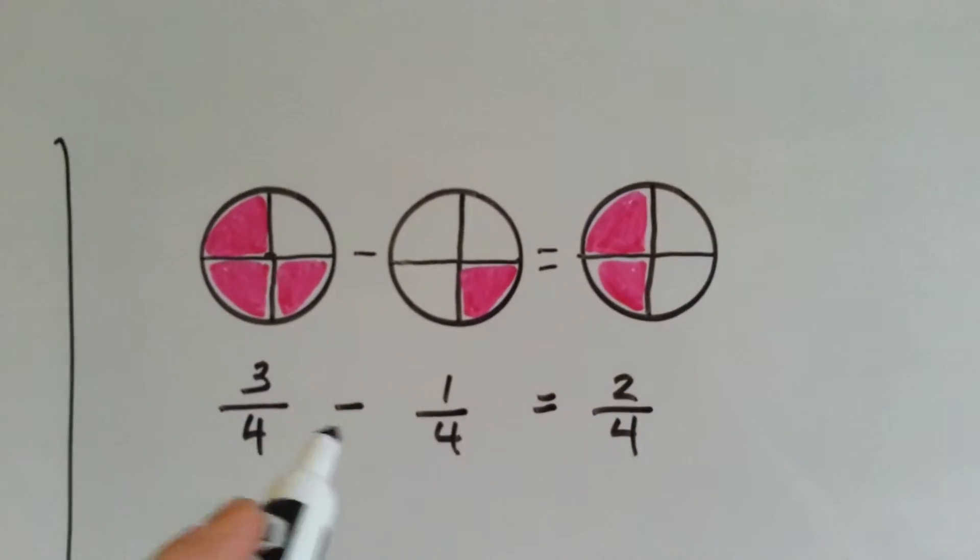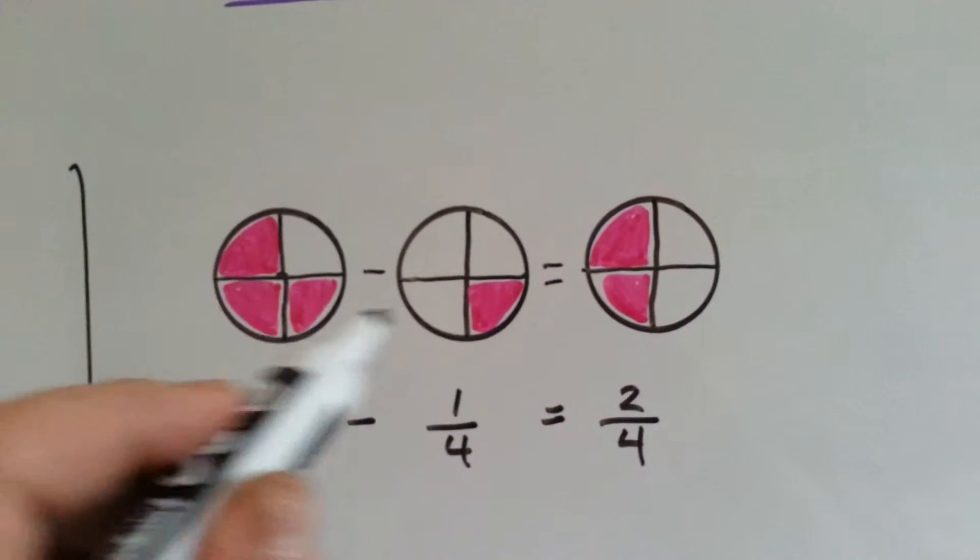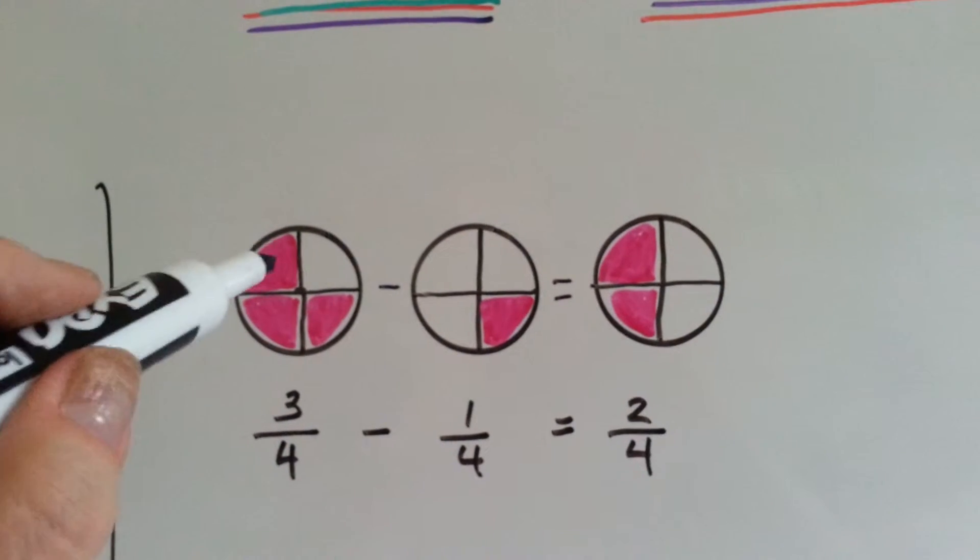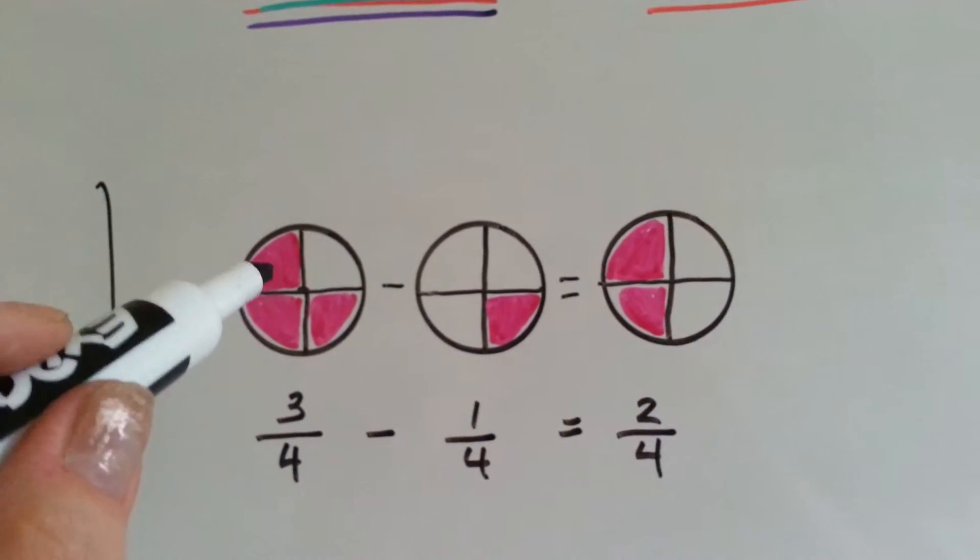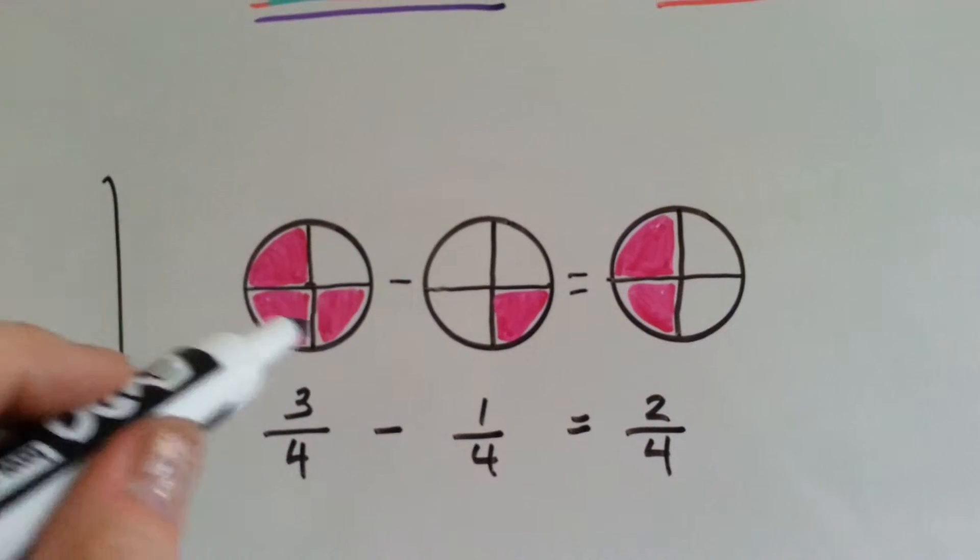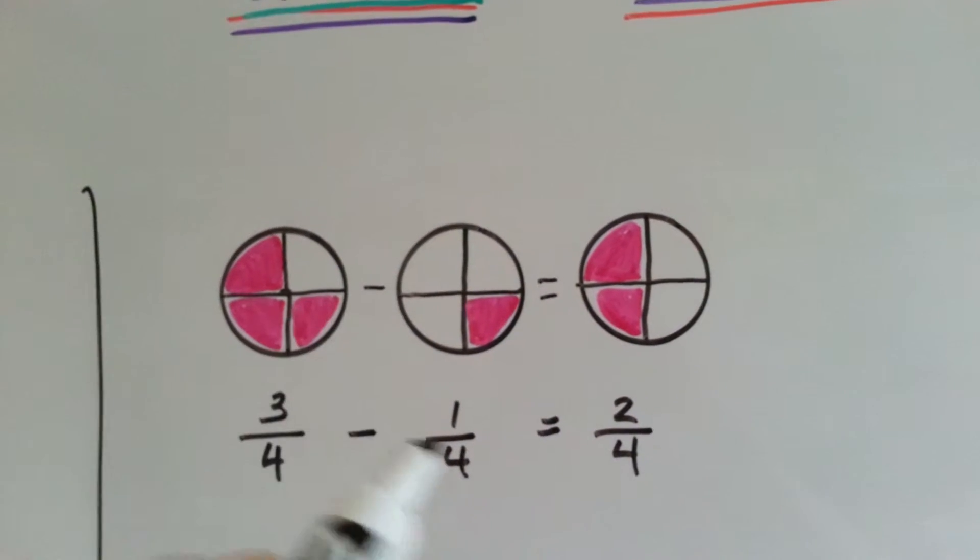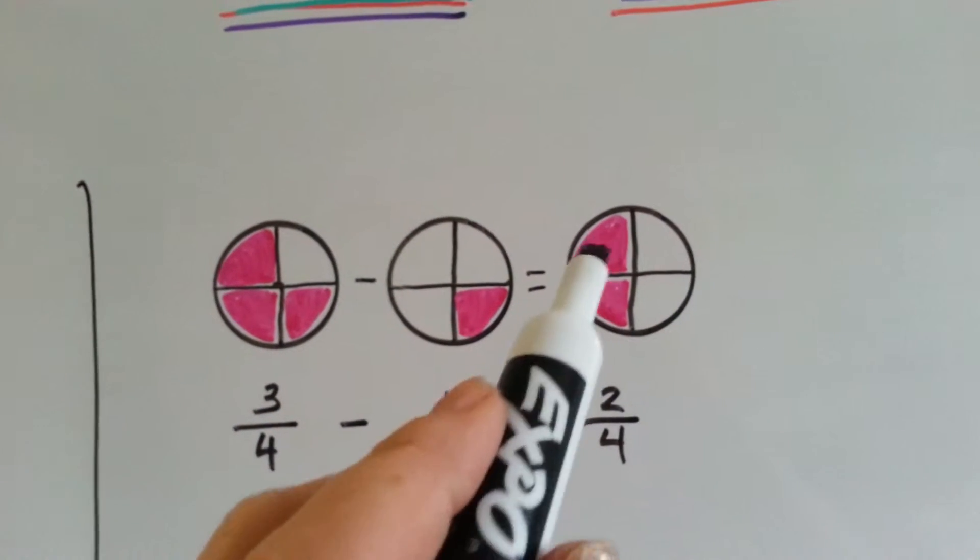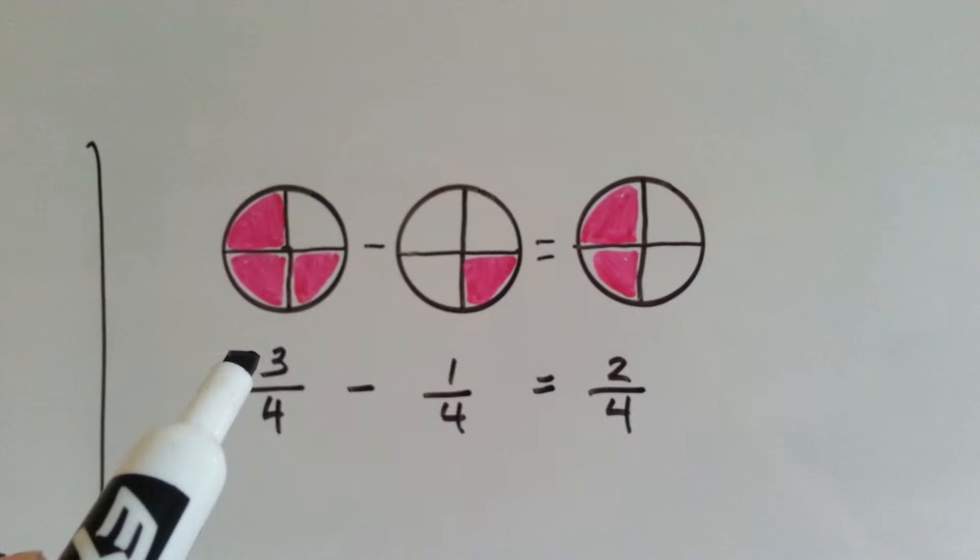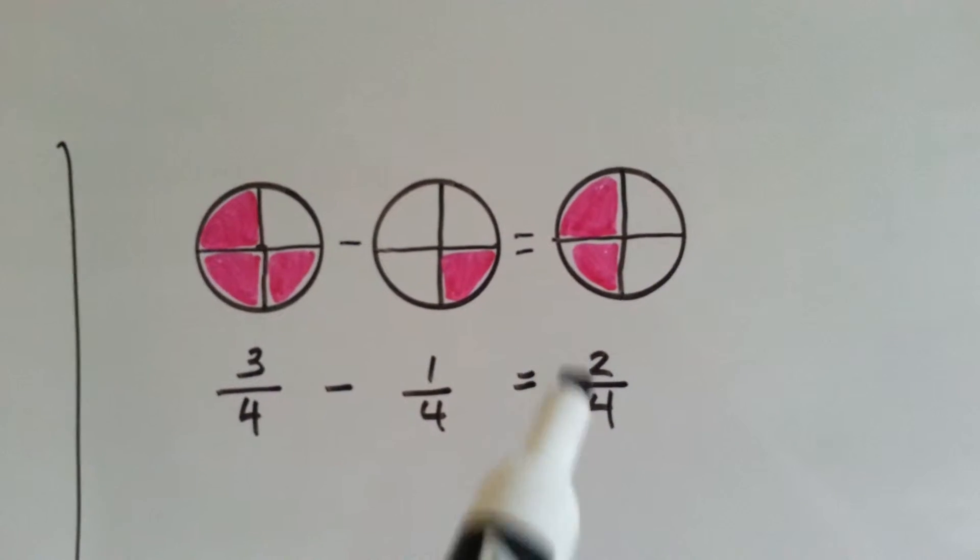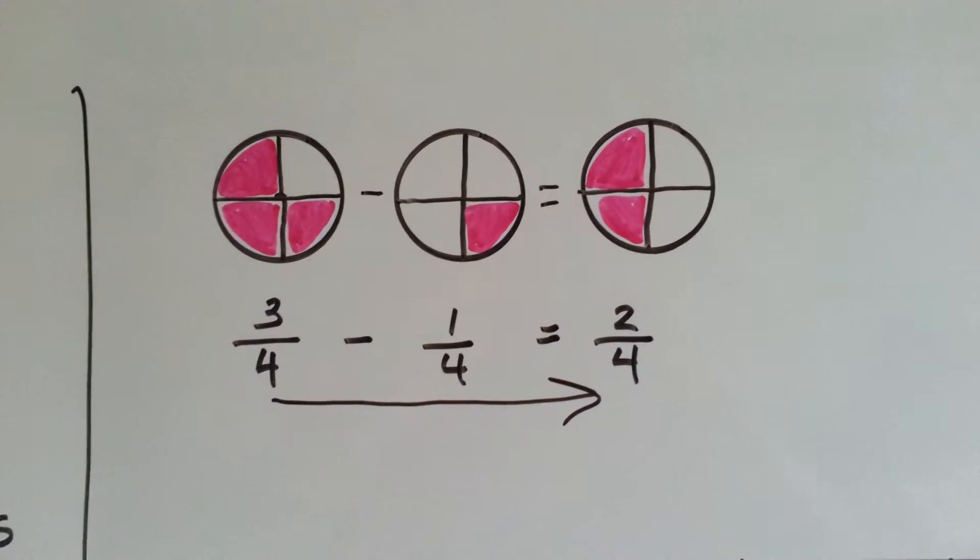These all have common denominators. All the denominators are the same because they're all cut into the same size. If you had three fourths, that's one fourth, one fourth, and one fourth. And you took one of those fourths away, if you took this one away, then it would look like this and you'd have one, two fourths. What we're doing is we're subtracting the numerator, three minus one equals two, and we're just sliding the denominator across.